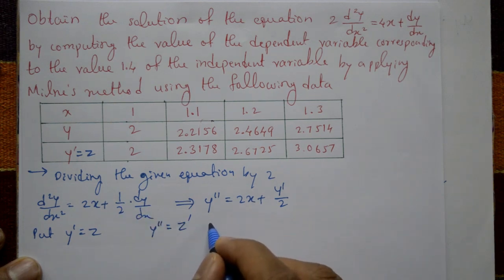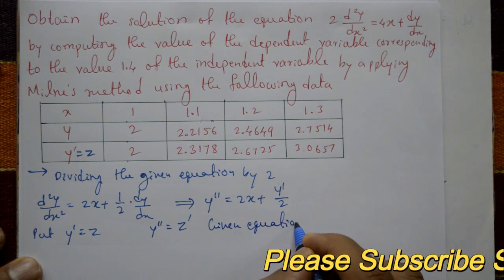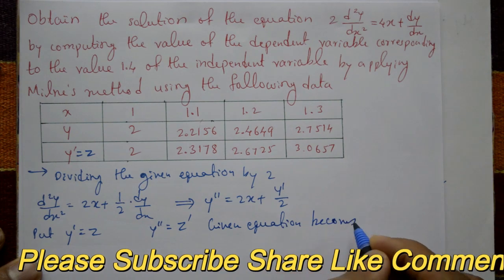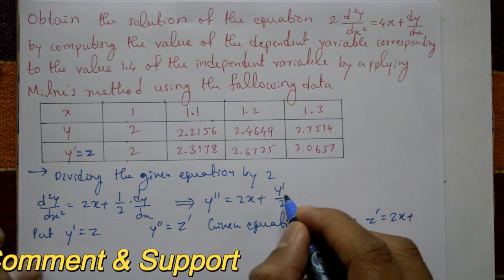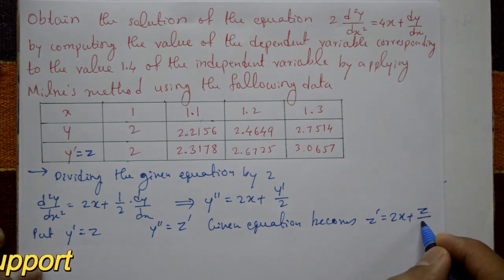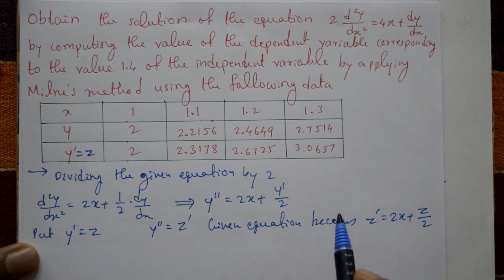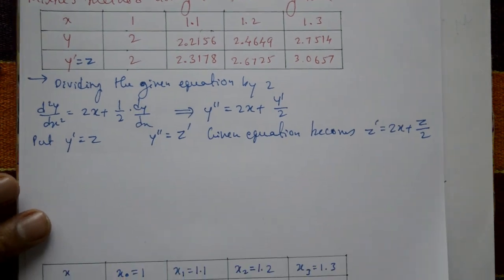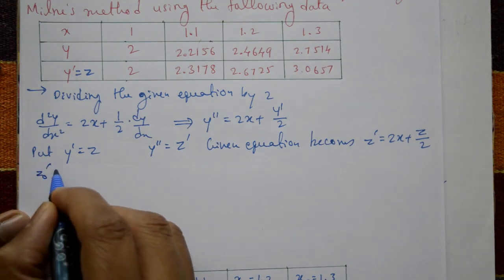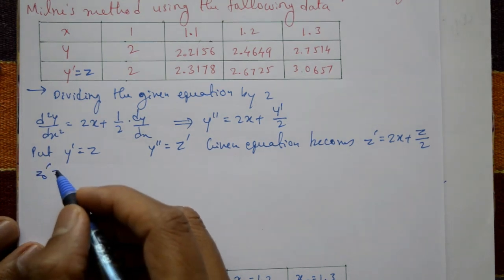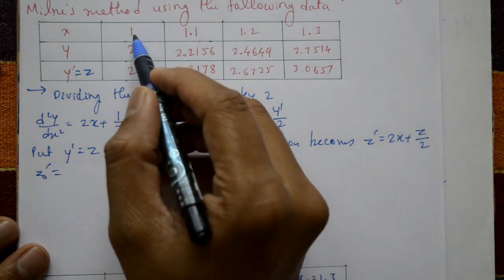The equation becomes: z dash equals 2x plus z divided by 2. Next we find the z dash values — z0 dash, z1 dash, z2 dash, z3 dash. First, z0 dash is computed using x and z variable values, specifically x0 and z0, y0 values.